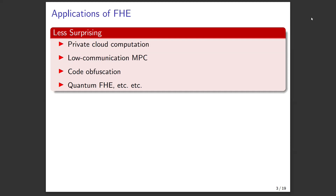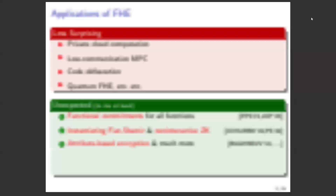A second example is multi-party computation with low communication: parties encrypt their individual inputs under FHE, send encrypted inputs to each other, locally compute the results, and jointly decrypt at the end. Code obfuscation is another: use FHE to encrypt code and then homomorphically run it. Quantum FHE — FHE is in the name, so obviously it's not surprising. Lots of great applications, but they don't surprise you that FHE comes into the picture.